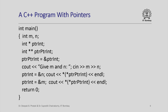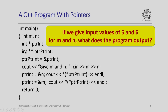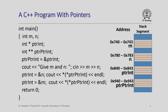Here is a simple C++ program with pointers. We have two integer variables named m and n. The variable pointerint is a pointer to an integer, and pointer-pointer-int is a pointer to a pointer to an integer. Each integer requires 32 bits of storage, so we need 4 bytes for each integer. Here is our stack segment where all local variables of all functions are stored.